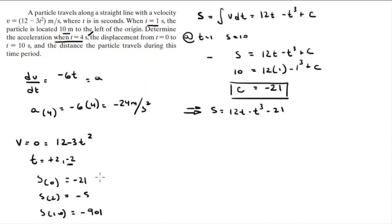So now to find the displacement, you need to find the differences. From 0 to 2, you went 16—that's the difference between minus 21 minus minus 5. And minus 5 minus minus 901 is positive 896. And when you add these two together, you get the distance traveled by this particle during this time period, which comes out to be 912 meters. This is the distance traveled.